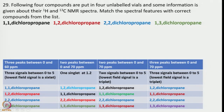I have a problem here. The following 4 compounds are put in 4 unlabeled vials and some information is given about their 1H and 13C NMR spectra. We have to identify the appropriate molecules. The 4 molecules are all chloro derivatives of propane: 1,1-dichloropropane, 1,2-dichloropropane, 2,2-dichloropropane, and 1,3-dichloropropane.